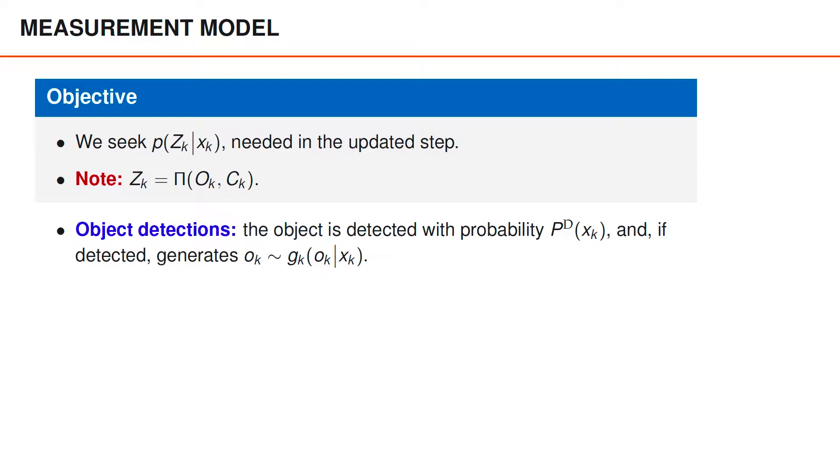That is, the matrix capital O_k contains a single vector, lowercase o_k, with probability p_d of x_k, and it is an empty matrix with probability 1 minus p_d of x_k.